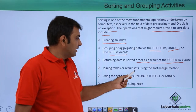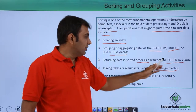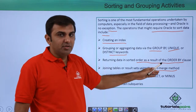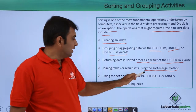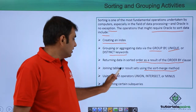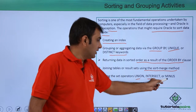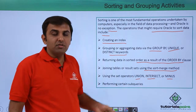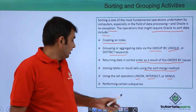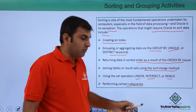Joining the table or the result set using the sort-merge join method — whenever the sort-merge method is used, sorting is done. Using the set operators UNION, INTERSECT, and MINUS — at that time the sorting operation is also done.